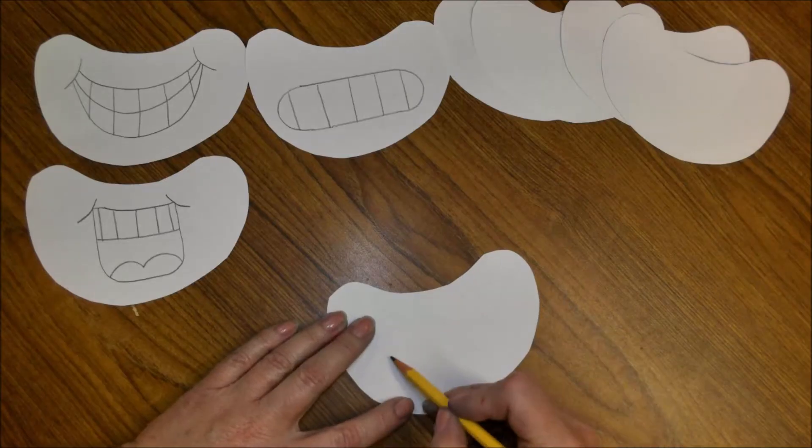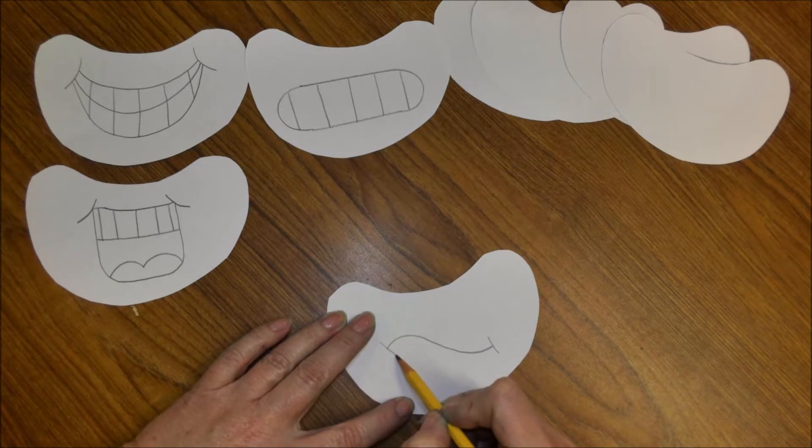Now for the confused emoji, which happens a lot right now. Do a wiggly line, two little cheek lines, and then a tiny little line underneath for the bottom lip.